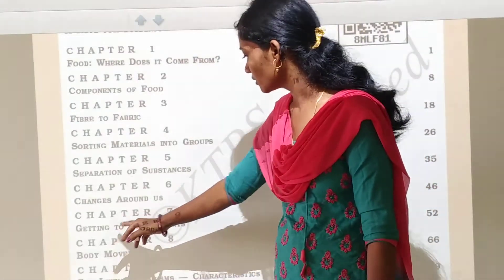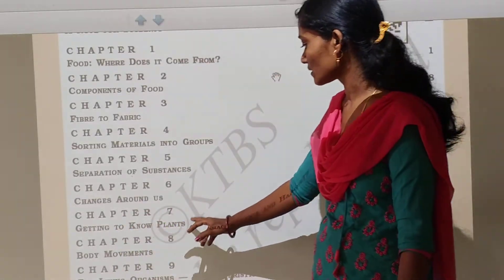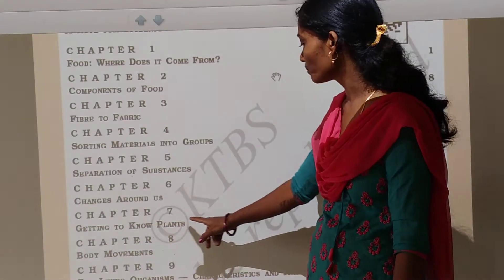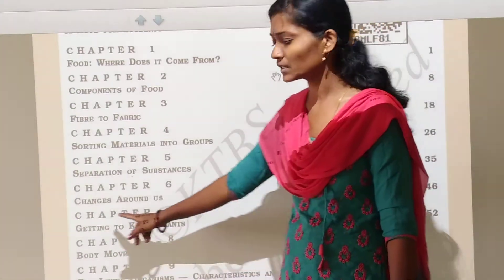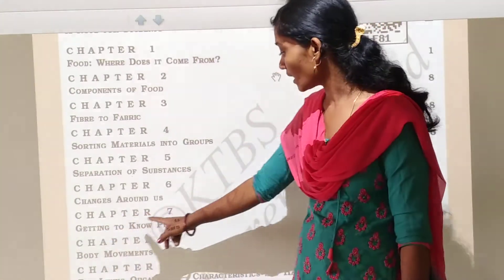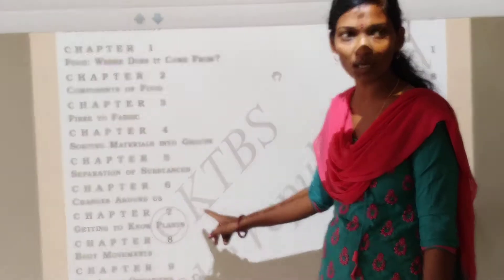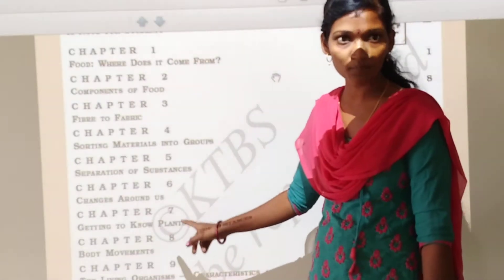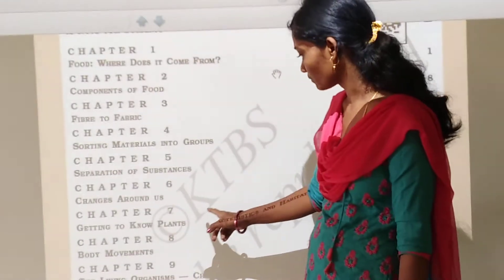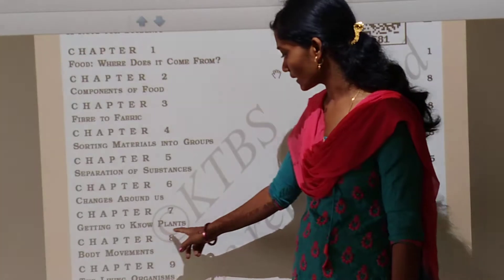Chapter number 7: Getting to know plants. In this chapter we study about the plant parts — cells, roots, leaves.